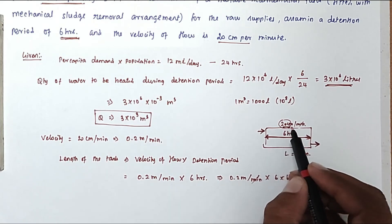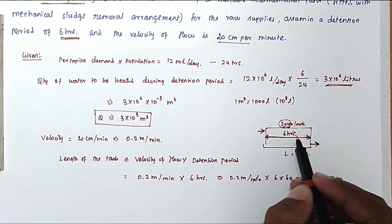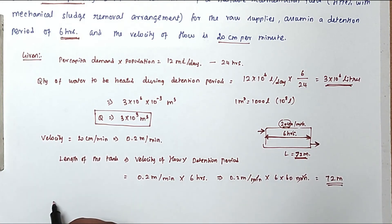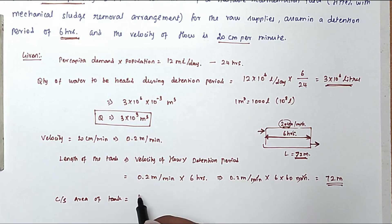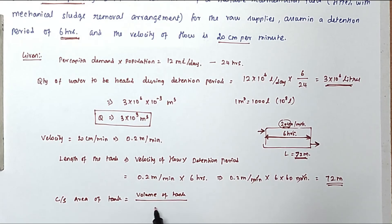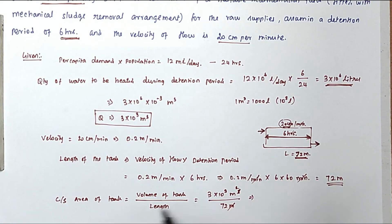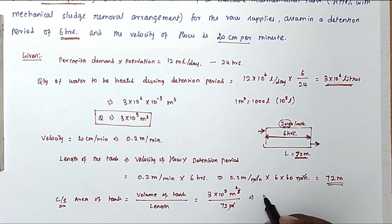The velocity is maintained at 0.2 meters per minute for 6 hours, giving a tank length of 72 meters. From that, we can find the cross-sectional area: area = volume of water to be treated ÷ length = 3000 m³ ÷ 72 m. The meters cancel appropriately, giving units of m². Solving this, we get 41.67 m².